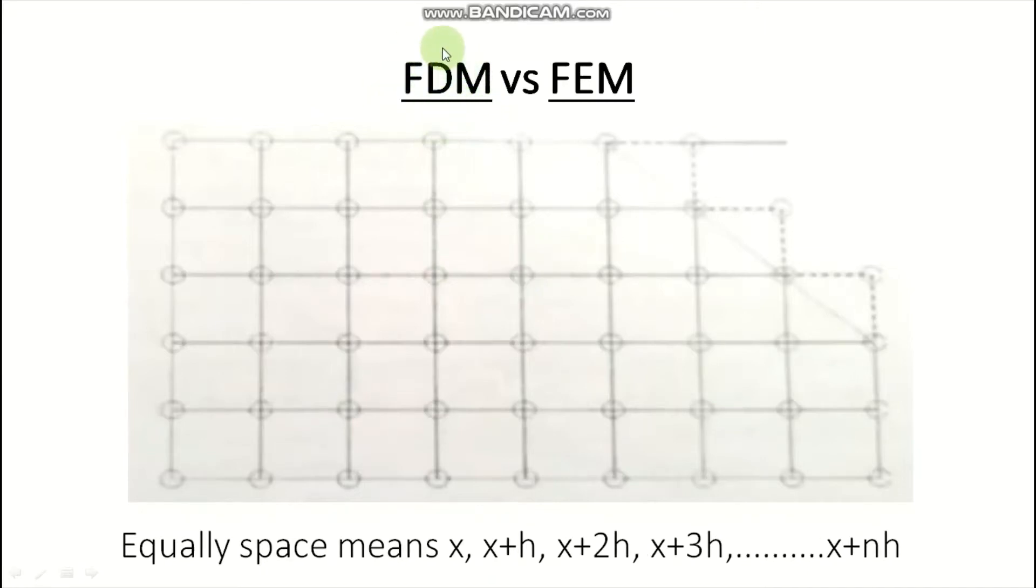Actually, finite difference is nothing but equally spaced. And this topic we already learned in mathematics subject. So equally spaced means if one value is 1, 2, 3, and 4, the difference between 1 and 2 is common difference 1. 2 and 3 is common difference, 3 minus 2 is nothing but 1. And if there is 3 and 4, then 4 minus 3 is common difference 1.